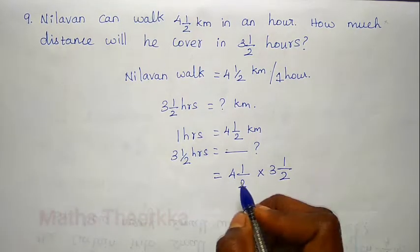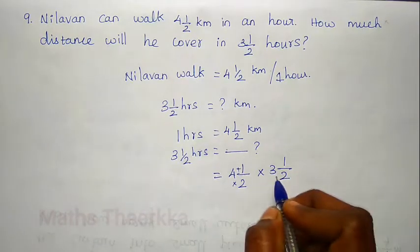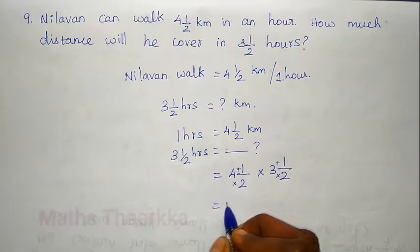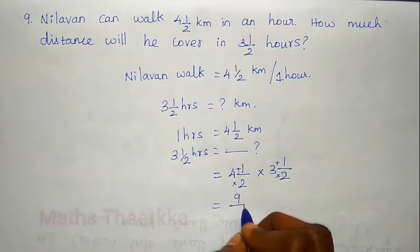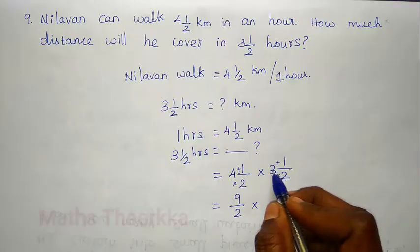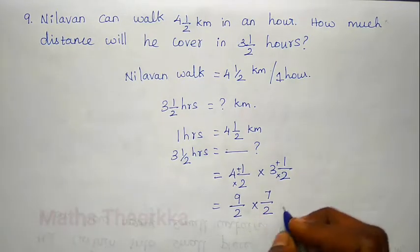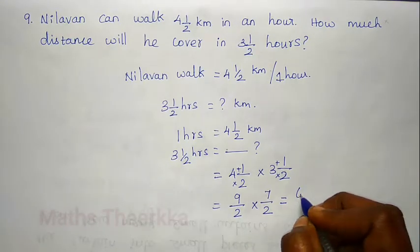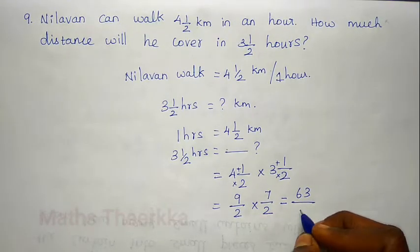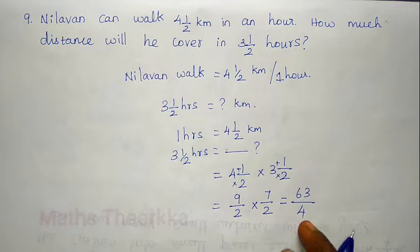We convert both to improper fractions. First: 2 × 4 = 8, 8 plus 1 = 9 by 2. Second: 2 × 3 = 6, 6 plus 1 = 7 by 2. So the answer is 9 × 7 = 63 by 2 × 2 = 4. Numerator multiplied by numerator, denominator multiplied by denominator.